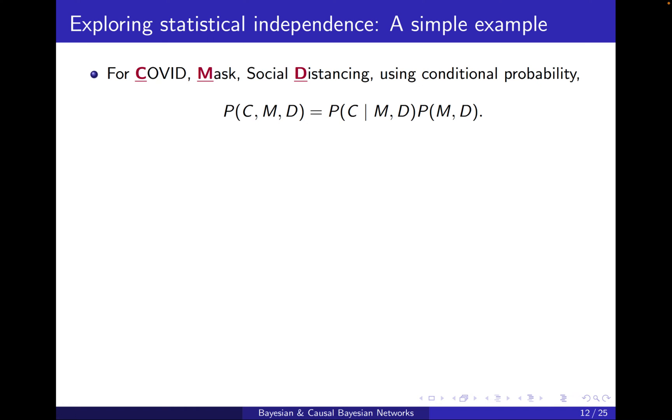Consider the COVID mask social distancing example. Now we had this joint probability distribution of P of C, M, D, which we can write it down as a multiplication of P of C condition on M and D times P of M and D. This is by the definition of conditional probability, if you just take M and D as the one that you want to condition on.